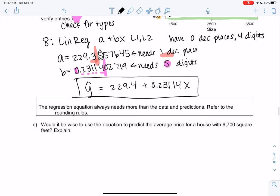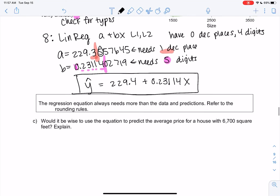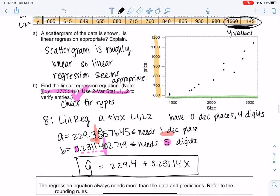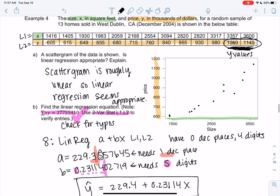So would it be wise if we were curious about a 6,700 square foot house? Should we use the equation? I'm leaning towards no, and why? If we look at the houses so far, we have like 1,500 square feet to 3,500. 36 is the largest.